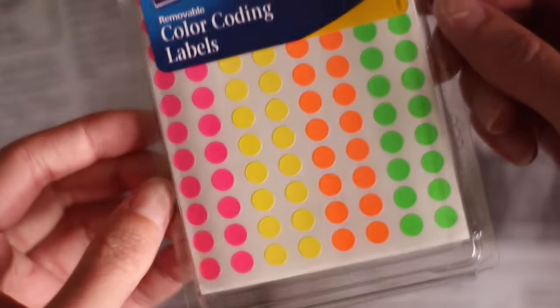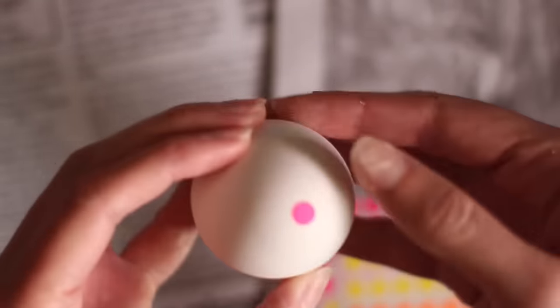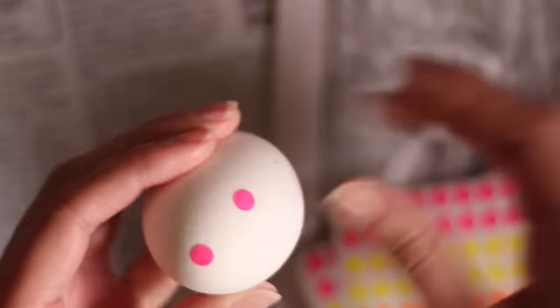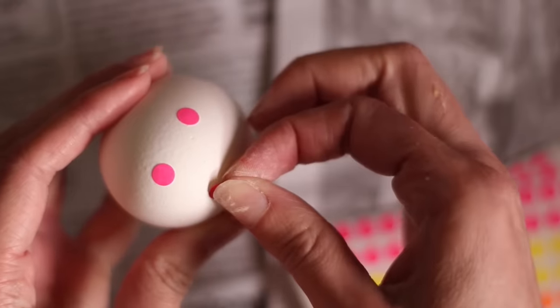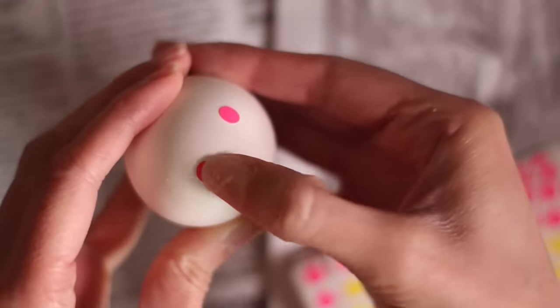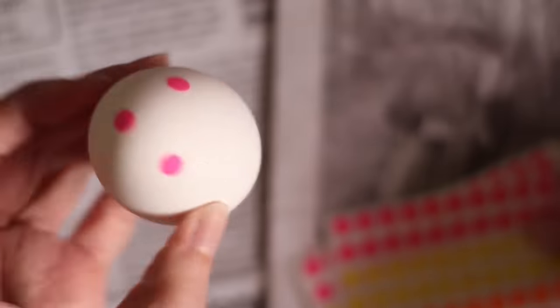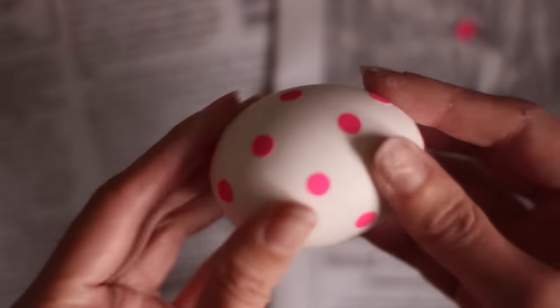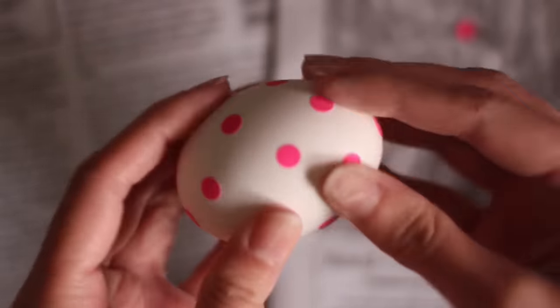The next trick is to use stickers to create a design on the egg. I found these stickers in the office supply section of Walmart. And it's best to use stickers that are pretty small because of the rounded surface of the egg. And I'm just placing these on the egg in a pattern. So I just did this all around the egg. Make sure they're all stuck on the egg pretty well.